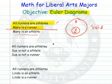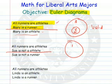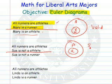Let's do another one. All runners are athletes; Sue is not an athlete — those are my premises. There's my athletes, here are my runners. Sue is not an athlete, so Sue is not in the big circle — she's out here. Sue is not a runner. It is correct, she does not fit in the runner circle. This is a valid argument.